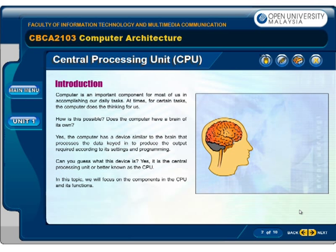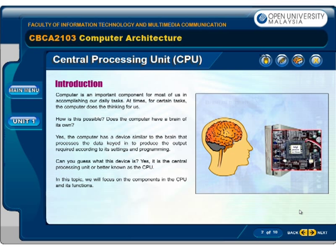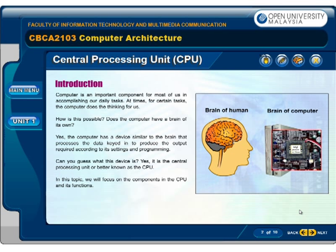The computer is an important component for most of us in accomplishing our daily tasks. At times, for certain tasks, the computer does the thinking for us. Does the computer have a brain of its own? Yes — the computer has a device similar to the brain that processes the data keyed in to produce the output required according to its settings and programming.